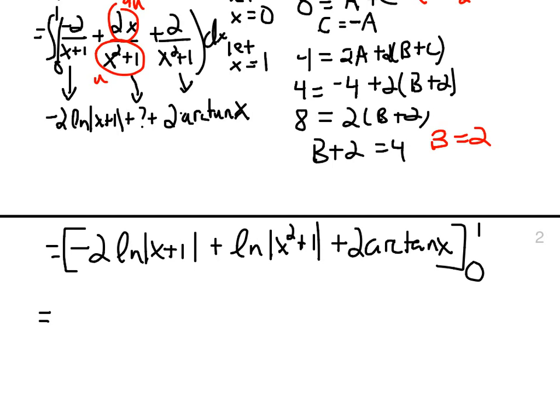If we put a 1 in, we get negative 2, the natural log of 2, plus the natural log of 2, plus the arc tangent of 1. If we put a 0 in, we get natural log of 1's. Those are 0's. And then the arc tangent of 0, also 0, conveniently.